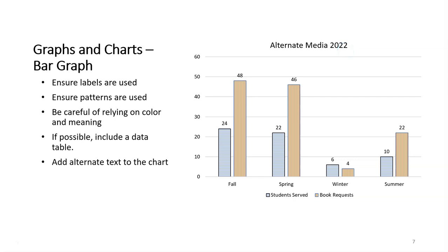Charts and bar graphs. I wanted to give you an accessible example first. This is a bar chart which represents the amount of students served. This graph represents alternate media for 2022 and it shows the amount of students served and the number of book requests for various semesters.